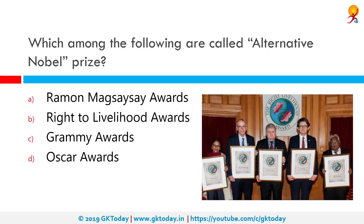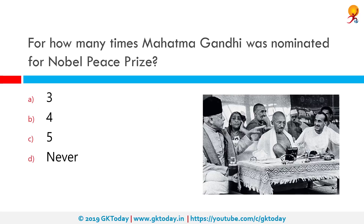Which among the following are called the Alternative Nobel Prize? Correct answer is Right to Livelihood Awards. The Right to Livelihood Award is an international award to honor and support those offering practical and exemplary answers to the most urgent challenges facing us today. The prize was established in 1980 by German-Swedish philanthropist Jacob von Uexkull and is presented annually in early December.